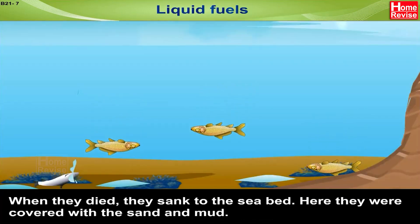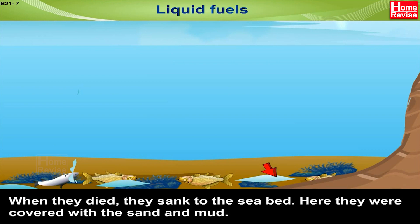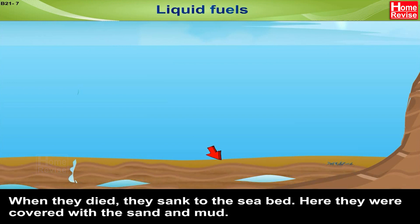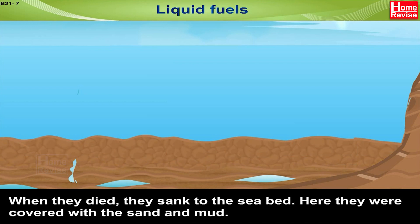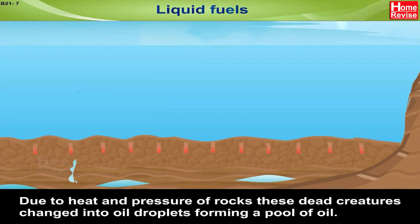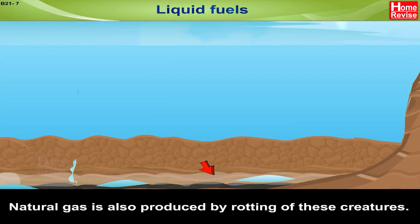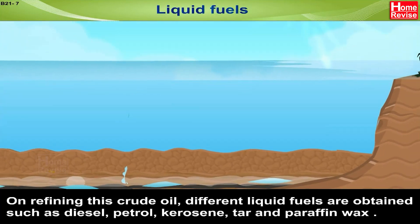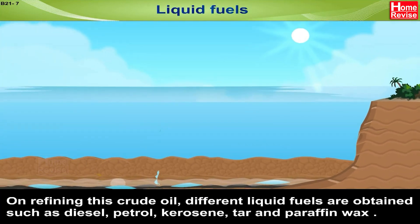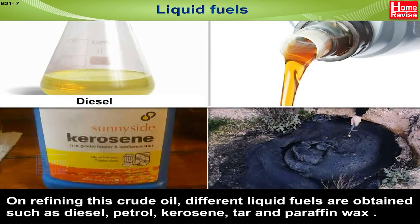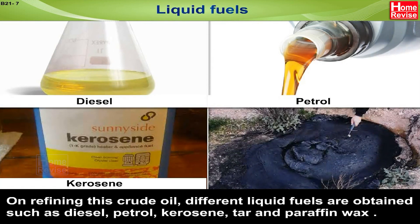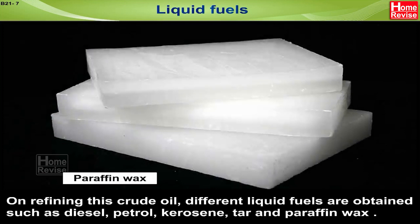Liquid fuels are formed from the remains of tiny sea creatures that lived millions of years ago. When they died, they sank to the seabed, where they were covered with sand and mud. Due to heat and pressure of rocks, these dead creatures changed into oil droplets, forming a pool of oil. Natural gas is also produced by the rotting of these creatures. On refining this crude oil, different liquid fuels are obtained such as diesel, petrol, kerosene, tar and paraffin wax.